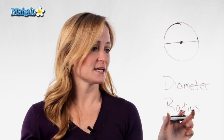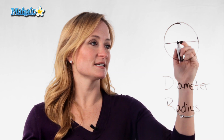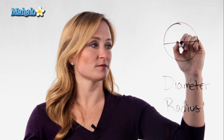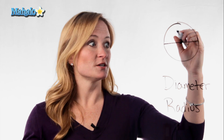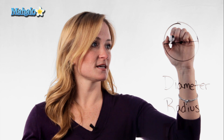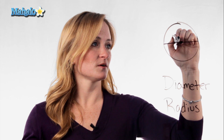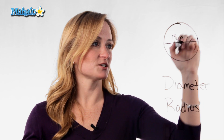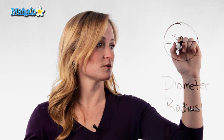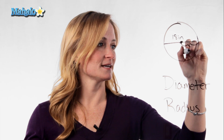And a radius is half of that. So the radius is any measure from the center point of the circle to any part of the circle. So in this case, if the diameter were 18 inches, the radius in this circle would be 9 inches.